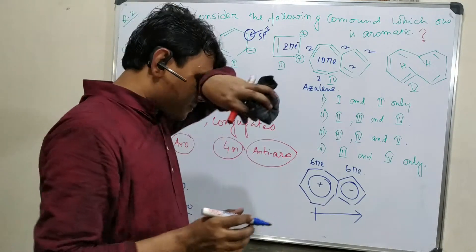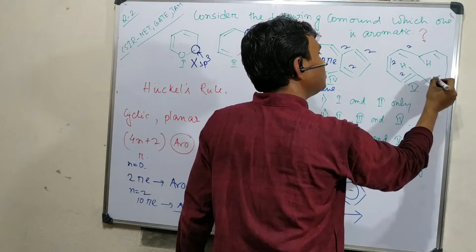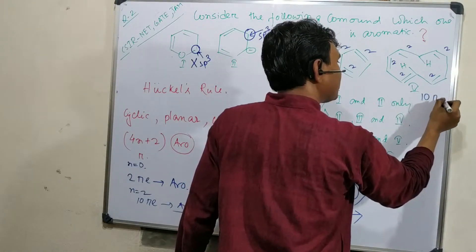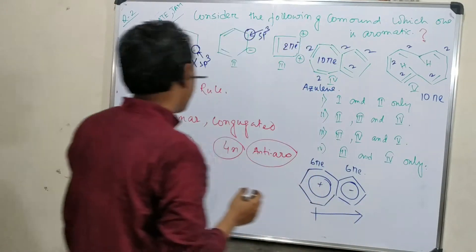Now the main twist about this: this is 2, 2, 2, 2, 2, 2, so 10 electrons, 10 pi electrons. Another thing: all contains pi orbital, so conjugated also. But the question is whether it is planar or not.